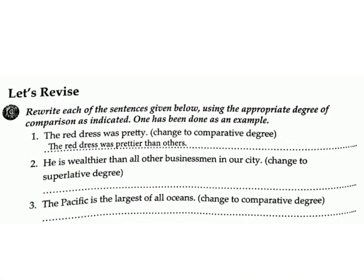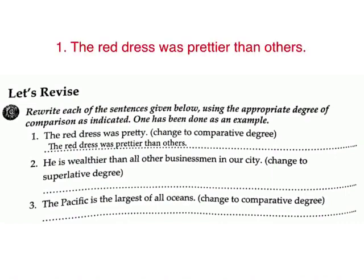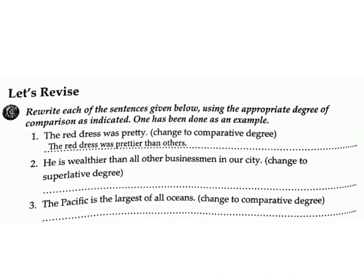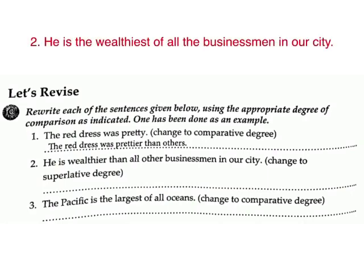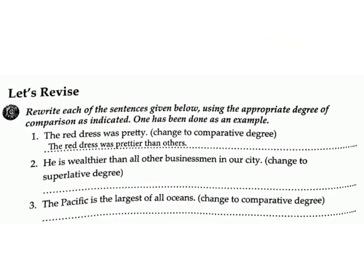Let's Revise. Rewrite each sentence using the appropriate degree of comparison as indicated. 1. 'The red dress was pretty' — change to comparative degree. Answer: The red dress was prettier than others. 2. 'He is wealthier than all other businessmen in our city' — change to superlative degree. Answer: He is the wealthiest of all the businessmen in our city.